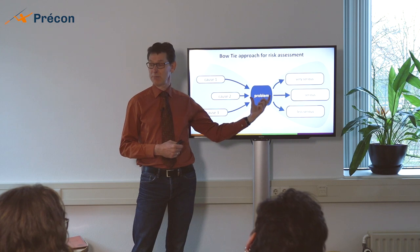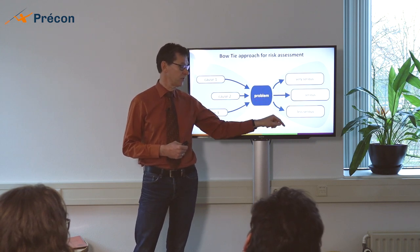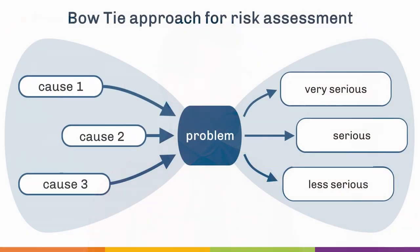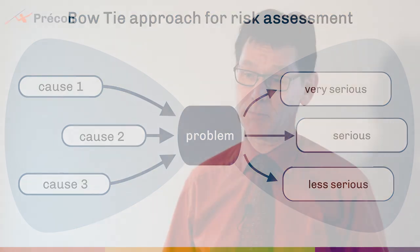The center of this model is a problem. And this problem has consequences. And these consequences can be very serious or less serious or somewhere in between. On the left side of the model we'll find the causes. And there can be different causes to the same kind of problem. This is the basic understanding of risk management.